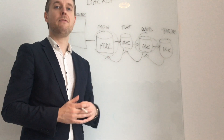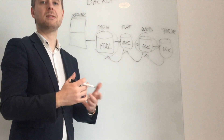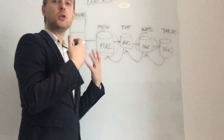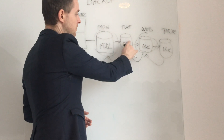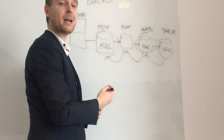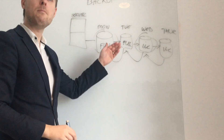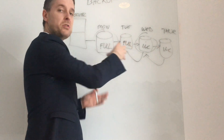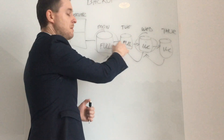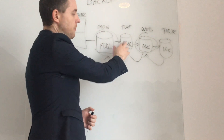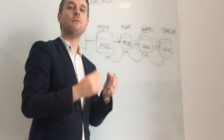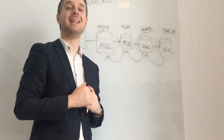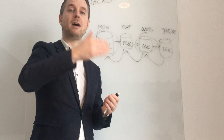A good policy that many companies use is to have a full backup once a week — perhaps on a Friday or Saturday — and then incremental backups throughout the week. If you do a full backup instead of an incremental, it has to back up all of the files all over again, which means a lot more disk space is needed. With an incremental, it only backs up the files that have actually changed since the last backup, so your disk usage will be substantially less compared to doing full backups every single day.